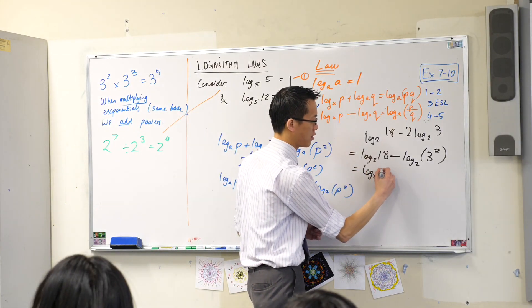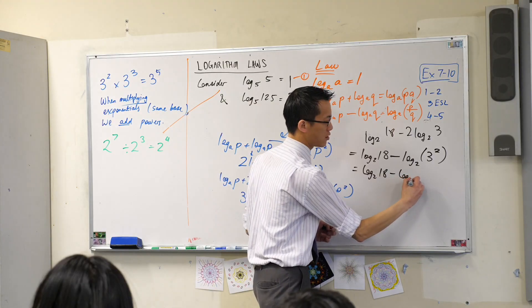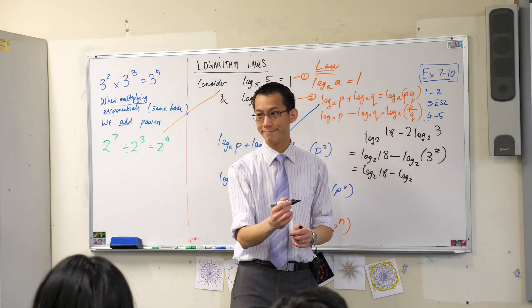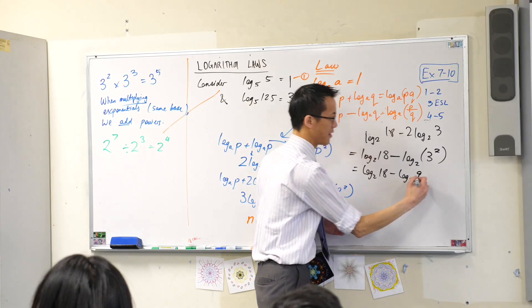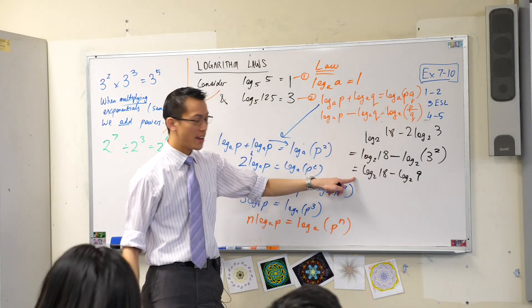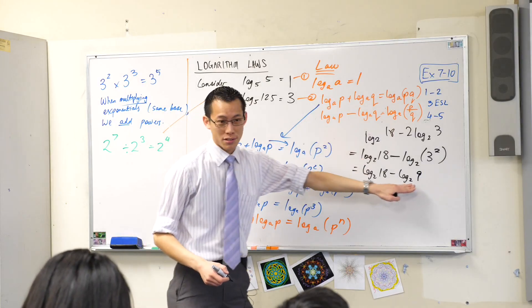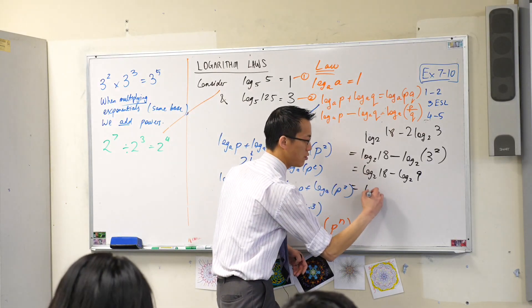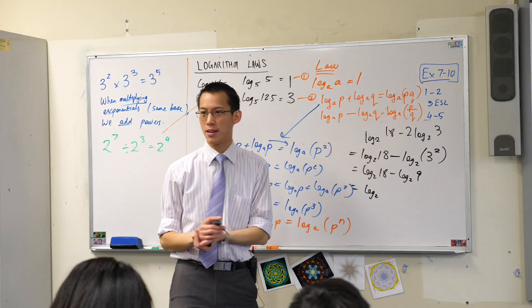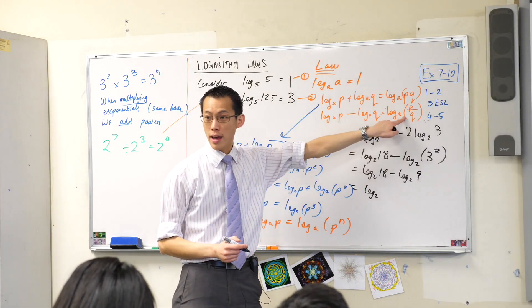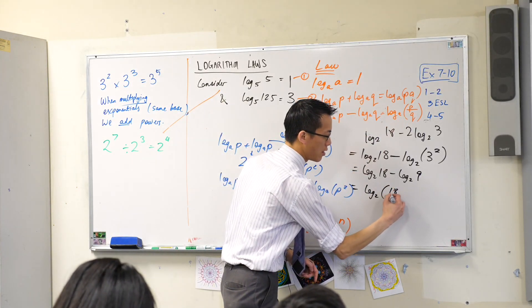This is log base 2 of 18 minus log base 2 of 3 squared is 9. So you can see here, wait, now I can use this. Two logs, same base. So what do you do to the numbers in between if you're subtracting? You divide.